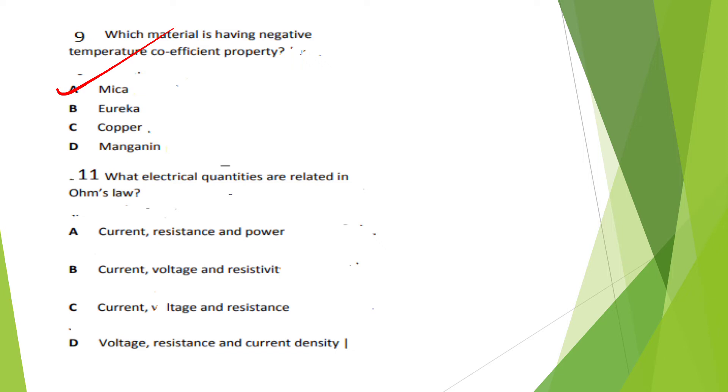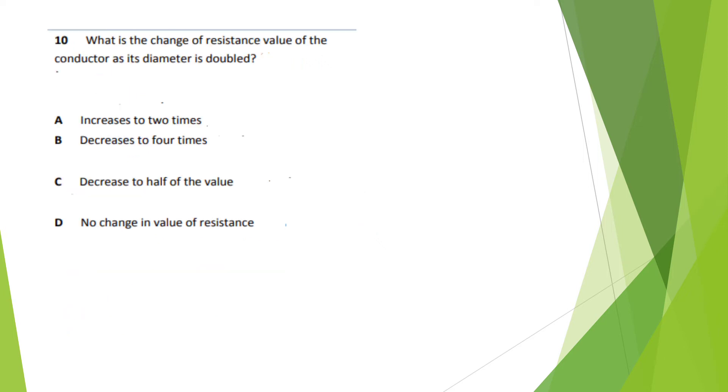Question 10: Which electrical quantities are related with ohms? Ohms relates to current, voltage, and resistance.